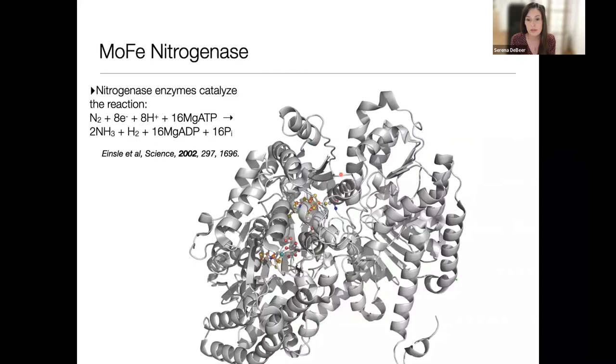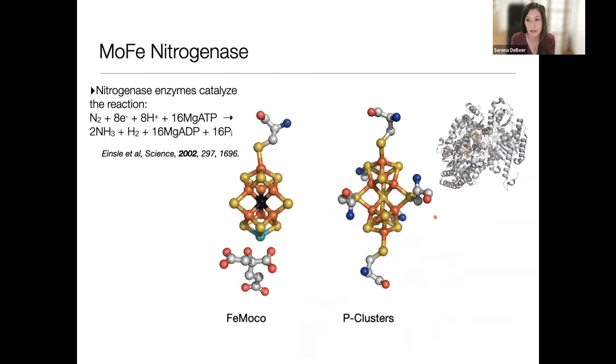It requires two component proteins. One is the iron protein - the native reductase where ATP hydrolysis occurs. Then the catalytic component, which I'm going to initially focus on. The catalytic part is this 250 kilodalton protein with two required cofactors: the P clusters - an 8-iron cluster which does electron transfer - and the FeMoCo site, which is where catalysis actually occurs. An ongoing question we haven't fully answered is: what are the electronic structure properties that enable this to be the catalytic site and the P cluster to be just an electron transfer site?